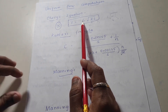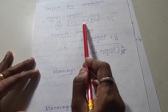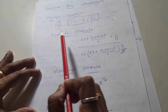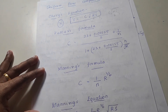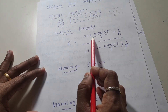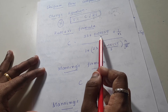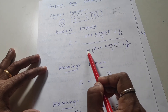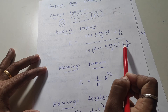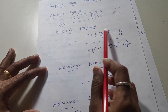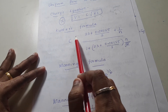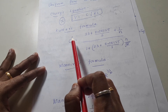For finding the value of C, which is Chezy's constant, it can be found out by using either Kutter's formula or Manning's formula. Kutter's formula is: C equals 23 plus 0.00155 divided by S, plus 1 by N, all divided by 1 plus the same value (23 plus 0.00155 divided by S) into N divided by root R. This is Kutter's formula, by which you can find Chezy's constant.